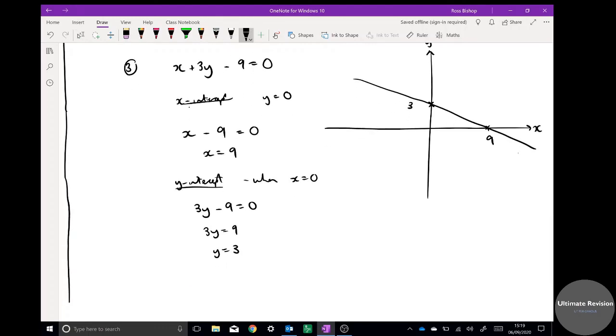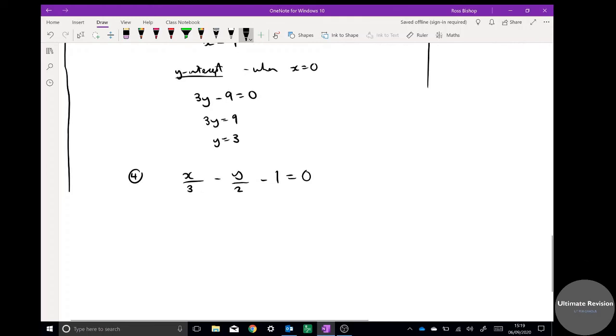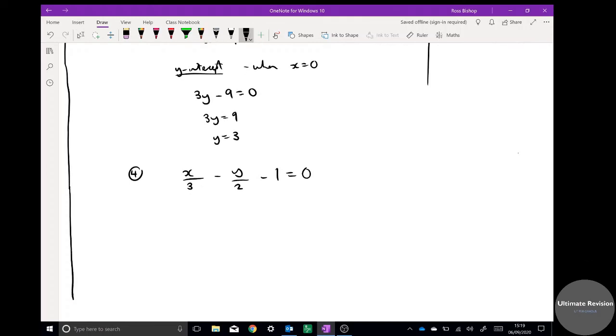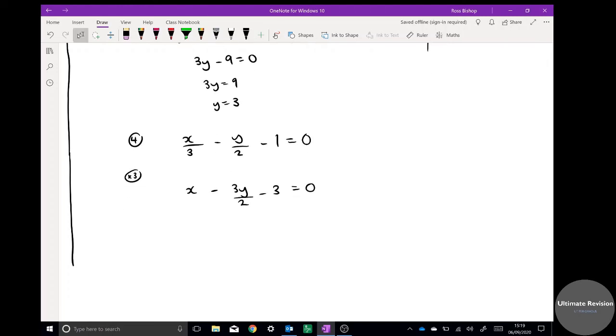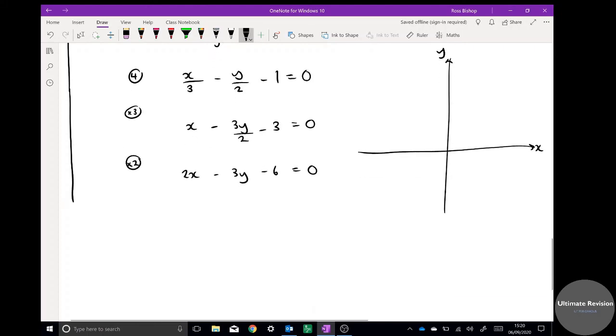Final question before you do some practice: x over 3. Looks a bit more complicated this one but it's still a straight line because there's only one variable, no squareds in there. I know it's going to be a linear graph. This takes us back to the previous part of the exercise. Let's get rid of the fraction, so let's times it all by 3: x minus, times it all by 2. Now 2x minus 3y minus 6 equals 0. And now I answer in the same way as before, so I need to get an x-intercept and a y-intercept.